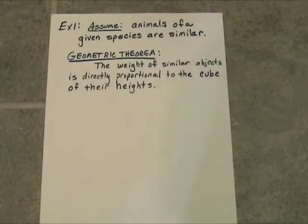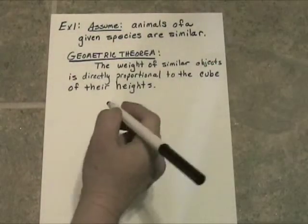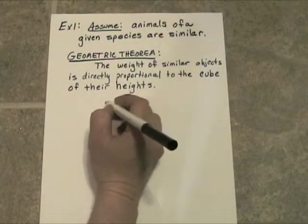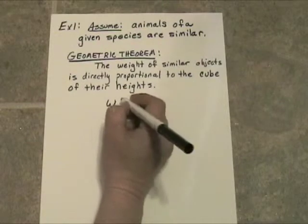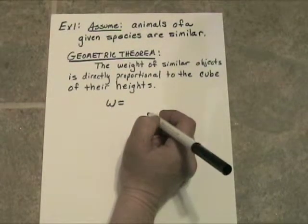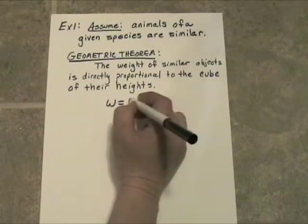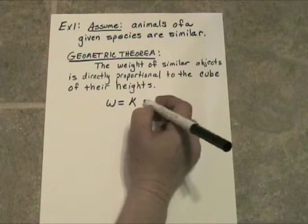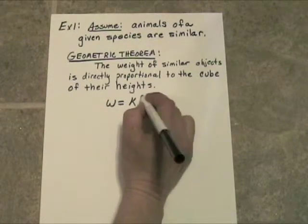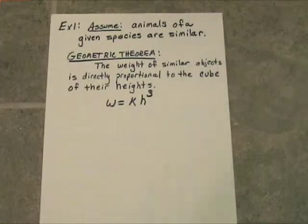There's a geometric theorem that says the weight of similar objects is directly proportional to the cube of their heights. So algebraically, the weight is directly proportional to the cube of their heights. We need a constant of variation and the cube of their heights — that's what we're looking at.